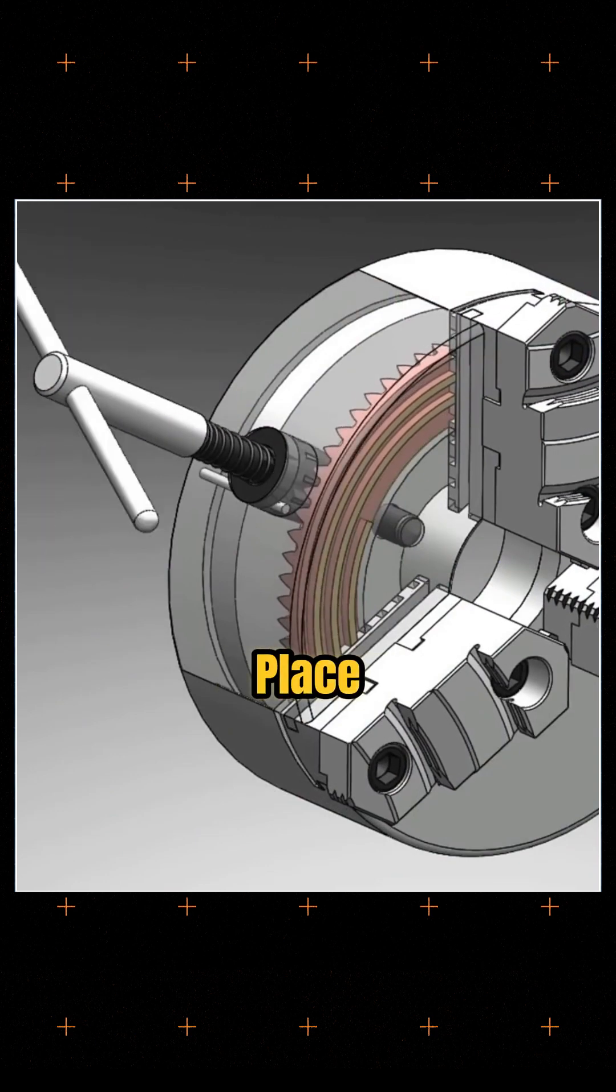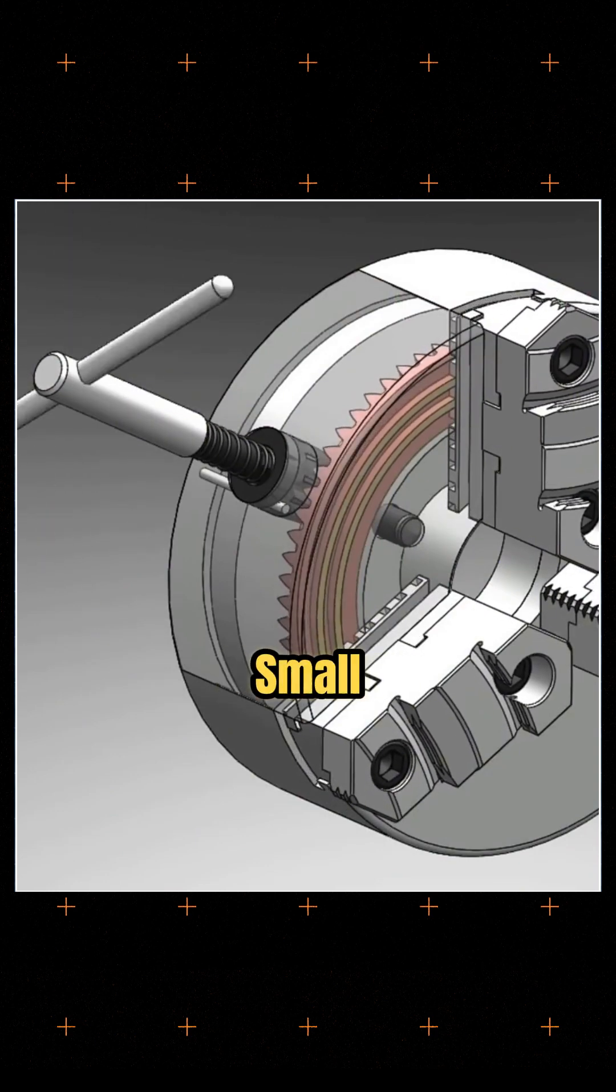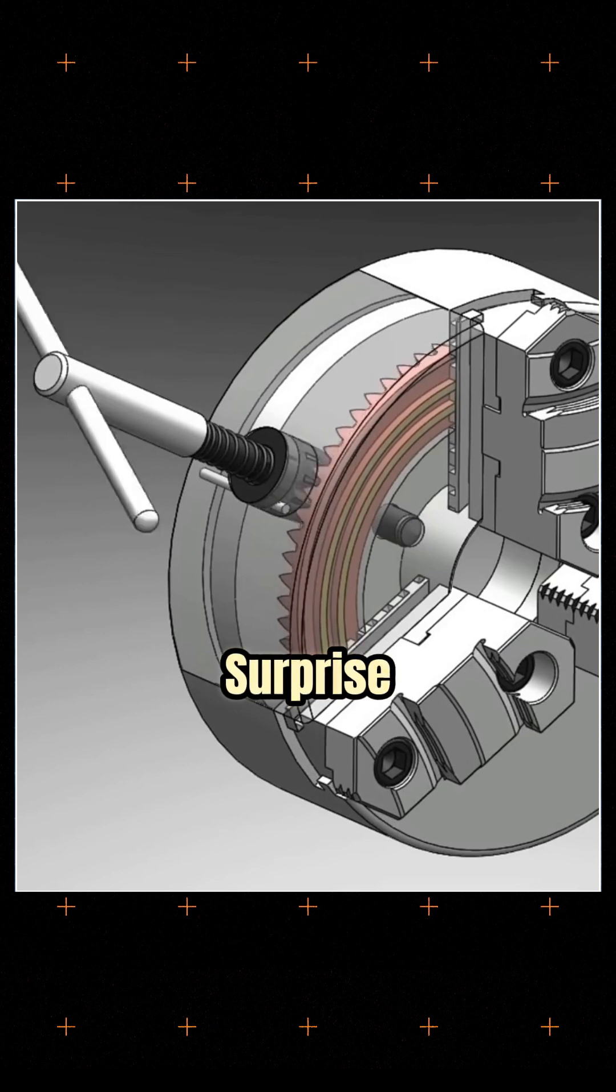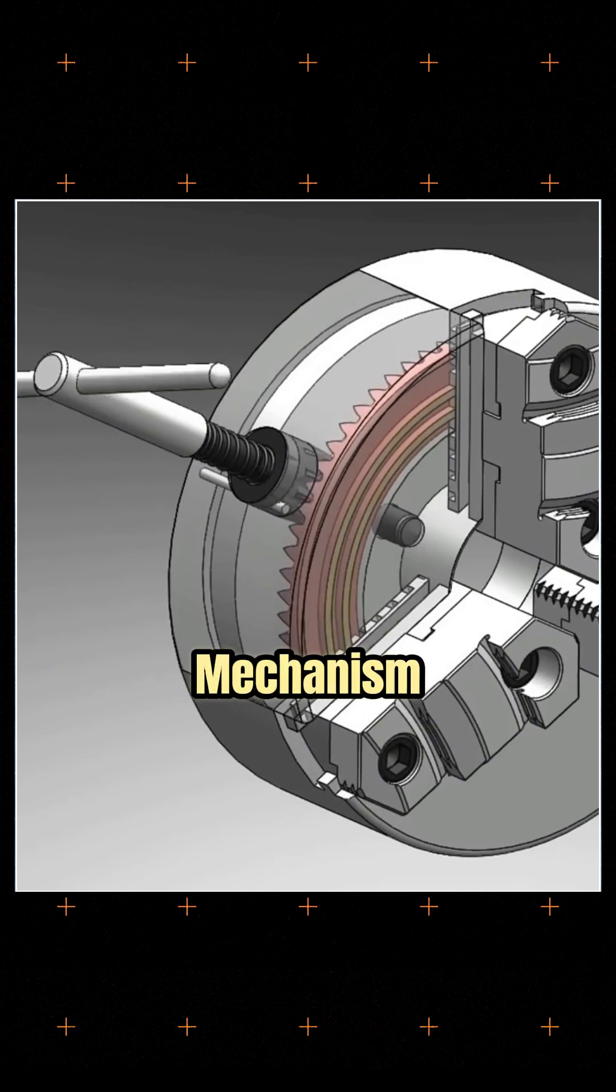To clamp anything in place, you need to rotate this small gear. And here's the surprise. Inside, the chuck hides a gear mechanism.